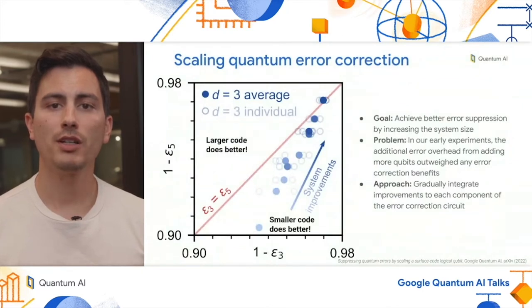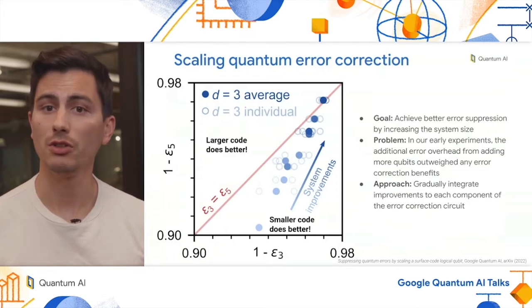So as Kevin mentioned in his talk, one of our main goals was to achieve better error suppression when we increased the system size on our chips. Shown on the left-hand side of your screen, you can see a plot which compares the performance of our distance 5 logical qubit, which comprises 49 physical qubits, to our distance 3 logical qubits, which use 17 physical qubits.